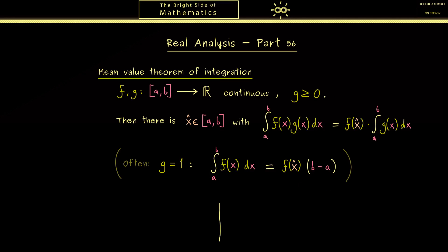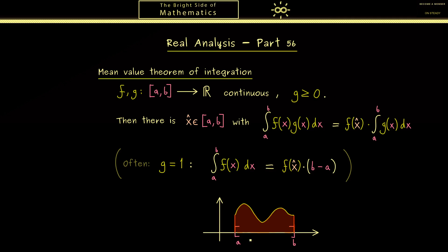I think this is a very nice formulation of the theorem and the visualization helps a lot. Imagine this is the graph of the function f; the area in blue is the value on the left-hand side. The right-hand side is represented by a rectangle where the width is b minus a and the height is f(x̂). It simply means we find a rectangle with the same area as the integral, and the claim is that we find such an x̂ — an intersection point of this horizontal line with the graph of the function.